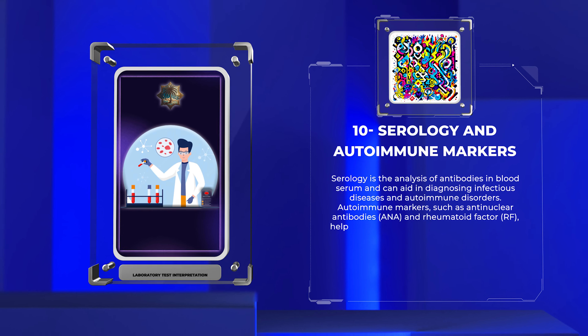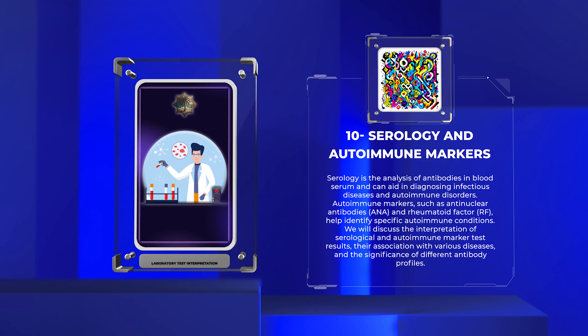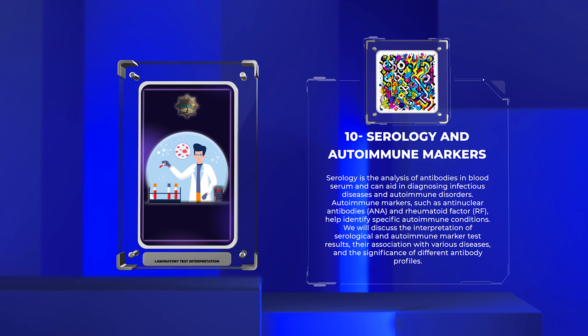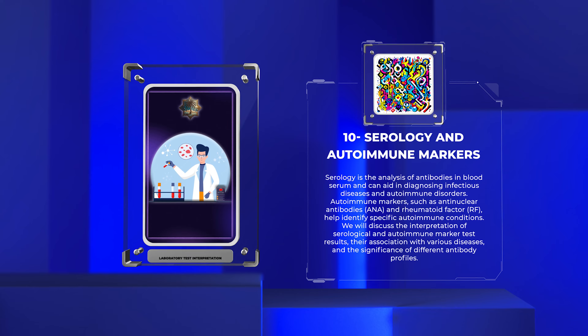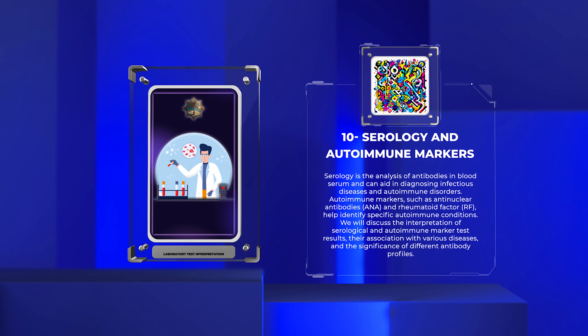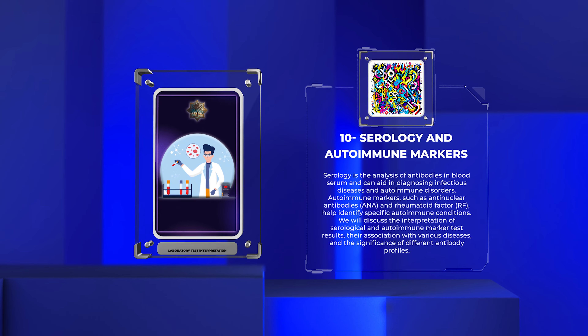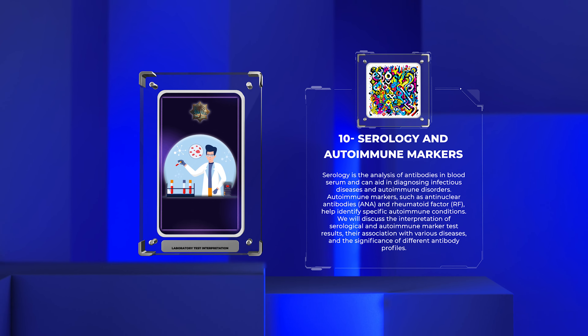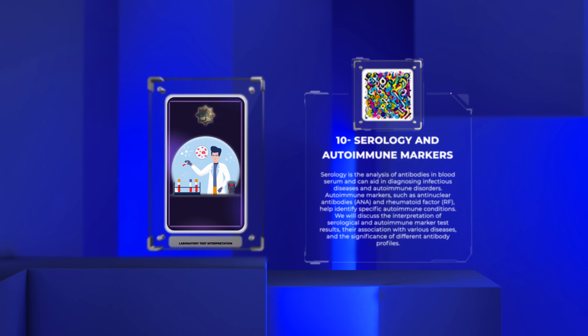Serology is the analysis of antibodies in blood serum and can aid in diagnosing infectious diseases and autoimmune disorders. Autoimmune markers, such as antinuclear antibodies (ANA) and rheumatoid factor (RF), help identify specific autoimmune conditions. We will discuss the interpretation of serological and autoimmune marker test results, their association with various diseases, and the significance of different antibody profiles.